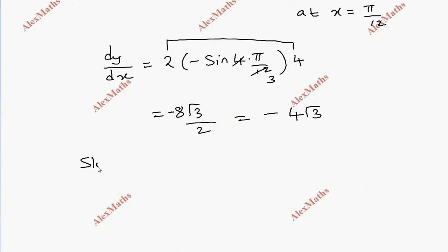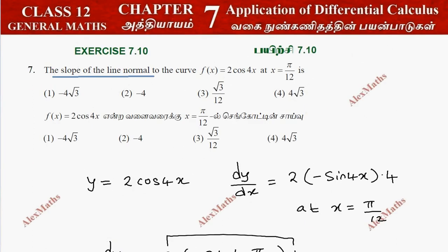Now we have the slope of the normal. The slope of the normal is the negative reciprocal of the slope of the tangent, which gives 1/(4√3).